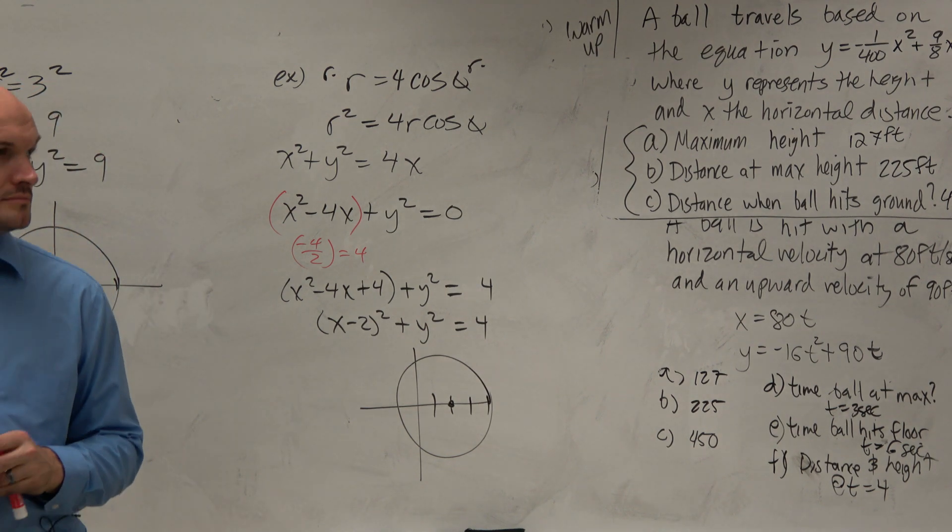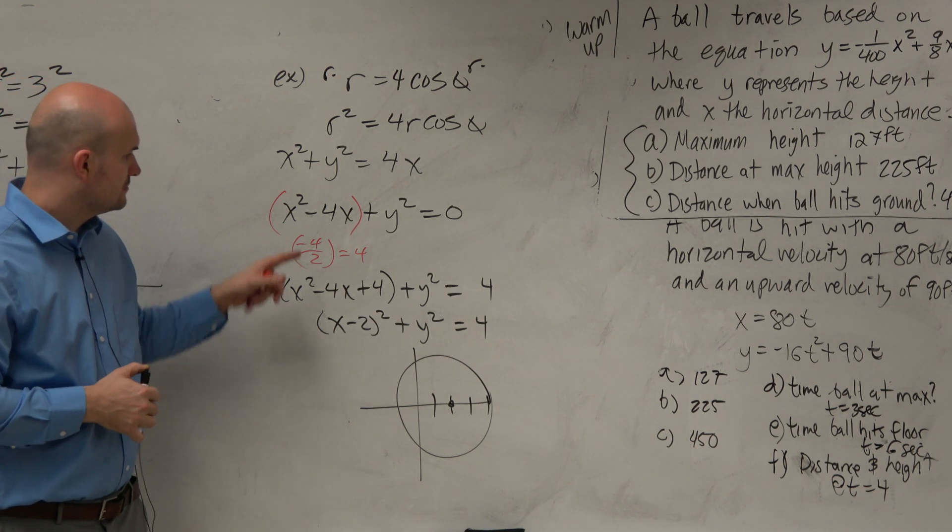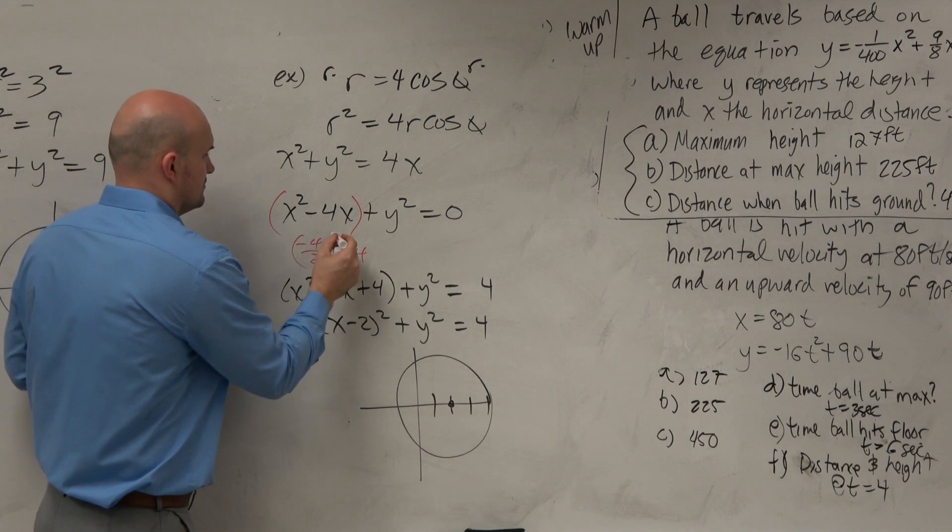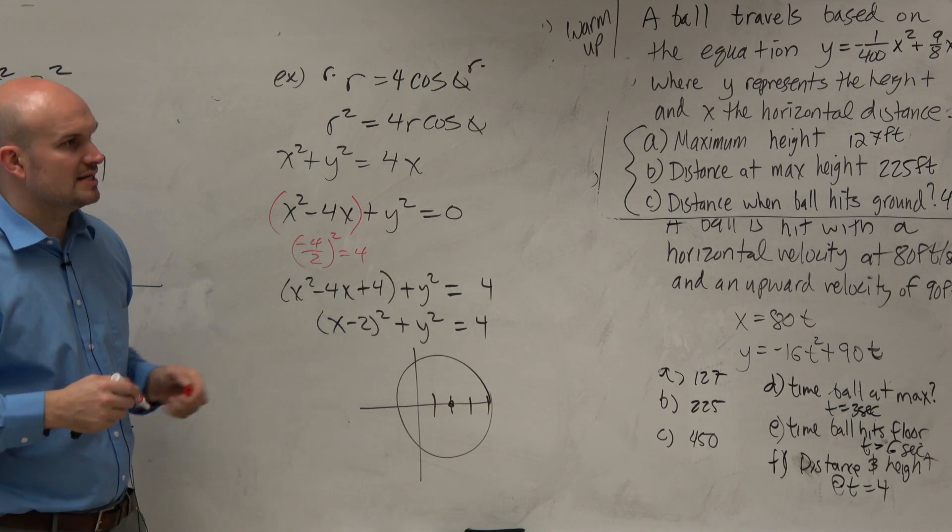Wait, what's the completing the square when do I get b divided by 2 squared, which I didn't write? And then you just add it to both sides, right?